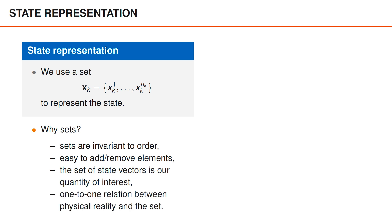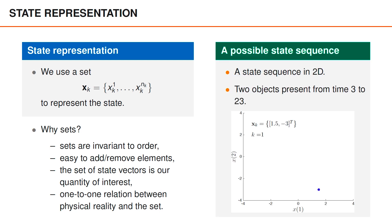It is also true that there is a one-to-one mapping between the physical reality and the set of states, which is another property that I find highly appealing. For instance, if you know the states of all the nearby objects, the set boldface xk is just the set of all those vectors. We can visualize the set boldface xk in a toy example, where the state vectors of the objects consist of two-dimensional positions. At the first two time steps, there is only one object present, and the set contains the state vector of that object. From time 3 to 23, there are two objects present, and the set simply contains the two object states. Note that we visualize the object states using two dots, and the set xk makes up a minimal representation of the locations of these two dots, since it contains the two vectors without bothering about how to order the vectors.